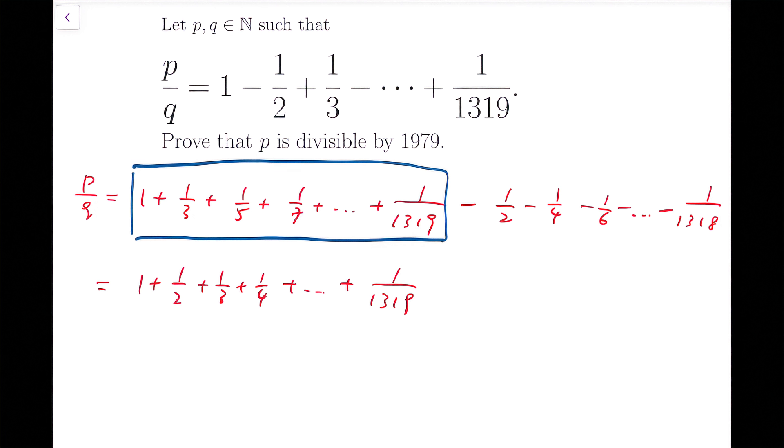So it becomes a finite harmonic series: 1 plus 1 over 2, 1 over 3, 1 over 4, all the way to 1 over 1319. And then to balance the whole expression, I need to subtract that back. I'm going to minus double of the even terms.